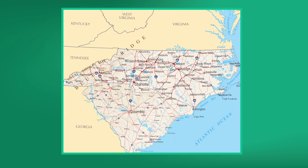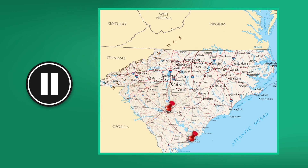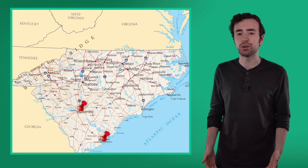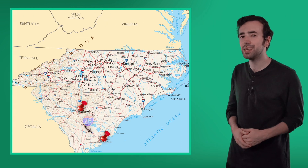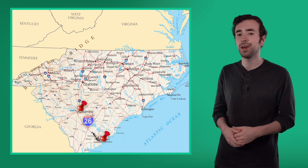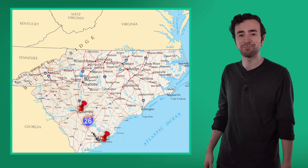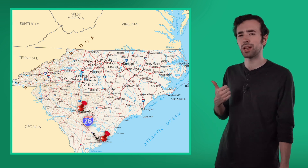Now, can you use the symbols to navigate us from Columbia to Charleston? Will we need to cross any boundaries to get there? Pause the video here and on the map of South Carolina in your PDF, highlight or trace the route you would take to get from Columbia to Charleston. In order to get from Columbia to Charleston, we'll need to drive southeast on I-26. We won't cross any boundaries — we are still in the state of South Carolina.